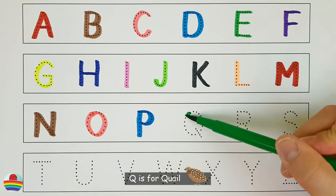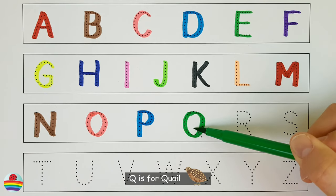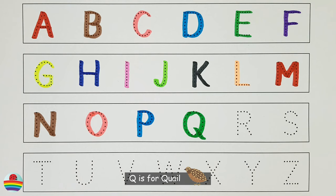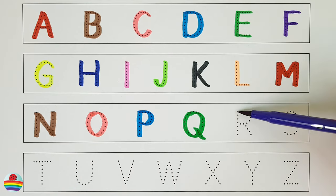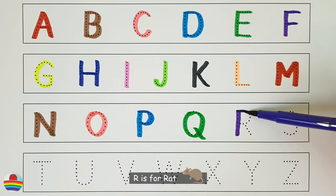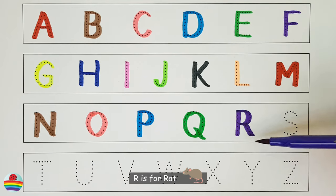Q. Q is for quail. Q. R. R is for rat. R.